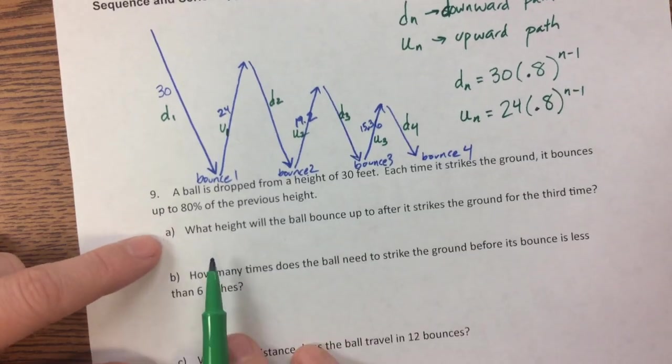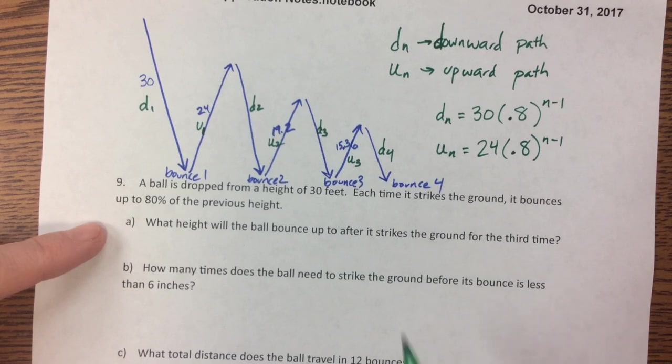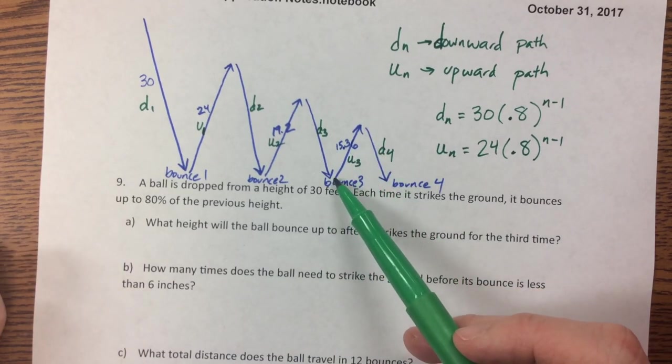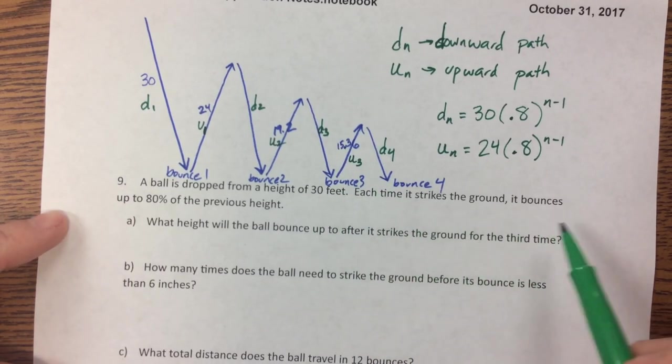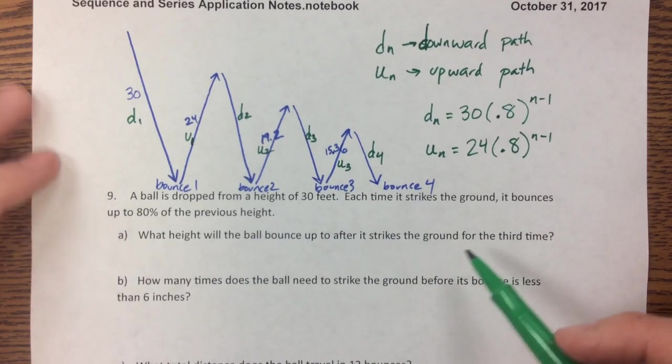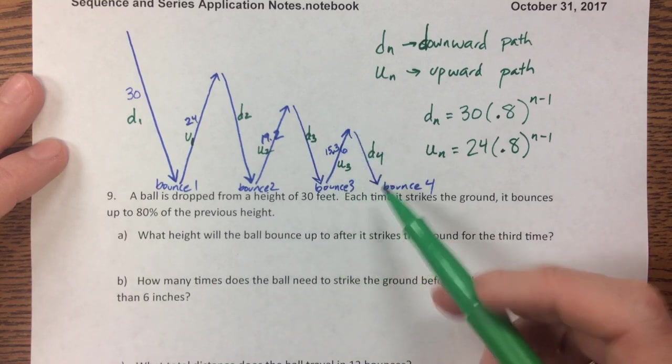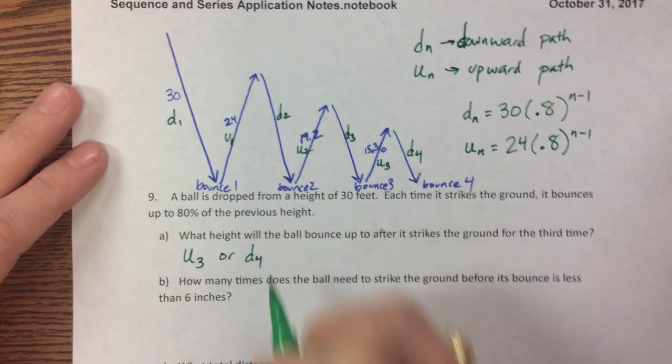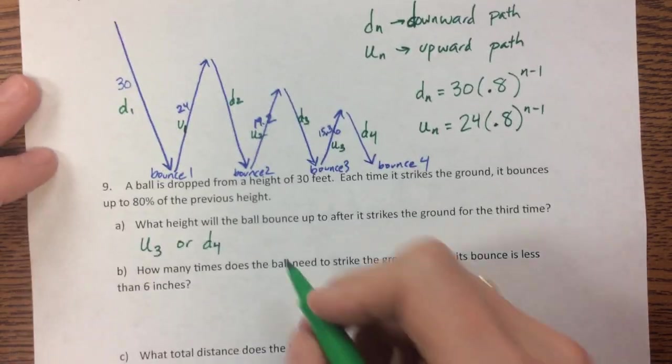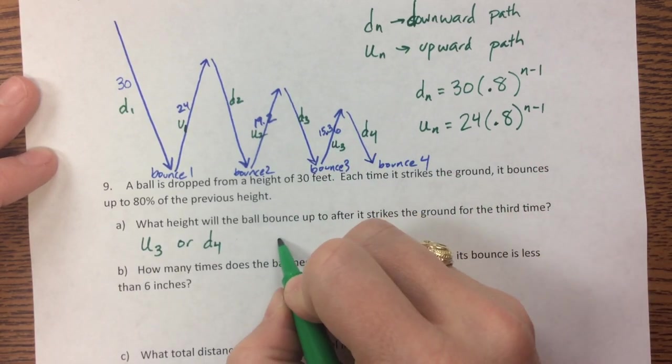So let's look at the first question. It says, what height will the ball bounce up to after it strikes the ground for the third time? Well, granted I drew that, but if I had said the 10th time, then it becomes a little bit harder. You don't necessarily want to draw them out or do the recursive way of getting that answer.